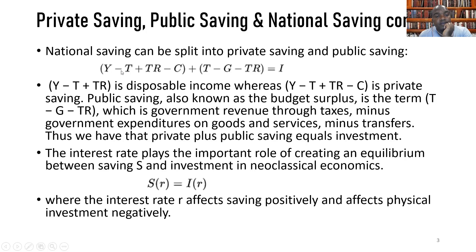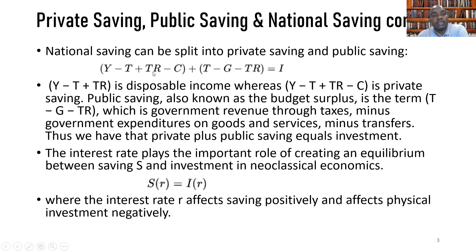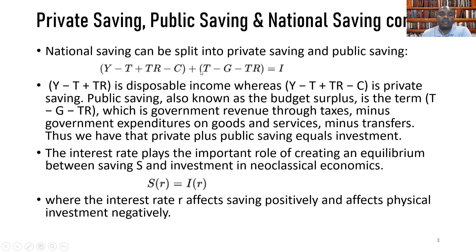As you can see, Y minus T is disposable income, as dealt with in our previous lectures. In a more robust sense, disposable income includes transfer payments received from the government through its various transfers, which augment it. If we remove household consumption expenditure from disposable income, we are left with private saving.